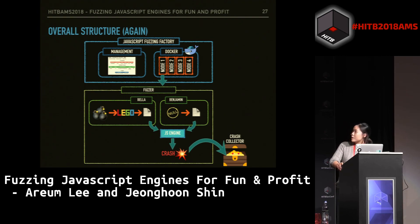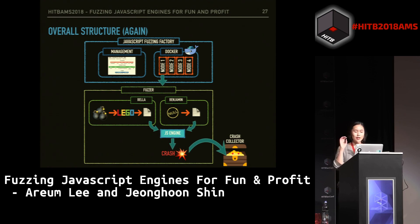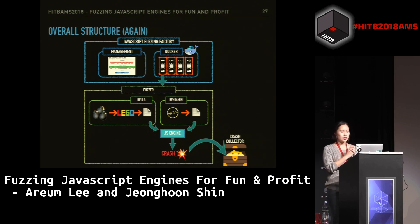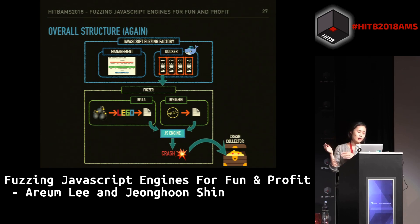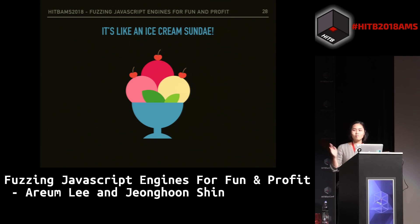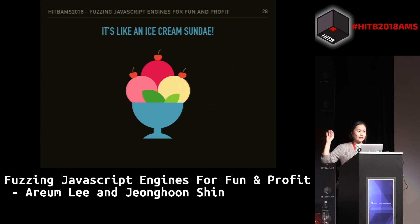So this is the overall structure once again. This is the JavaScript fuzzing factory, making use of the web interface as management and using Docker to manage the nodes. Each node has our fuzzer and the JS engine in it. The fuzzer contains Bella and Benjamin. Bella generates test cases based on mutation, Benjamin creates test cases based on generation, and both are thrown into the JS engine. They are monitored, and if there's a crash, it is collected in the crash collector based on our regex pattern. It's like an ice cream sundae: JFF on the outside, the Docker nodes inside it, and on top the fuzzer and our JS engine.